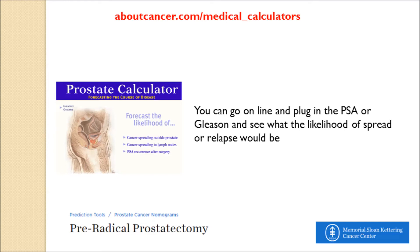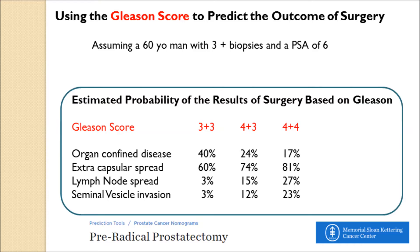There are online medical calculators accessible from aboutcancer.com, with a whole section on prostate calculators. The Memorial Sloan Kettering calculator can predict the odds the cancer has spread based on the Gleason score. As the Gleason score gets higher, the probability that the cancer is still confined to the gland gets lower. The risk of extracapsular spread — the cancer breaking through the capsule of the gland — gets higher. The risk of cancer in the lymph nodes jumps from 3% up to 27% based on Gleason alone. And the odds of invasion into the seminal vesicle also increase with higher Gleason.